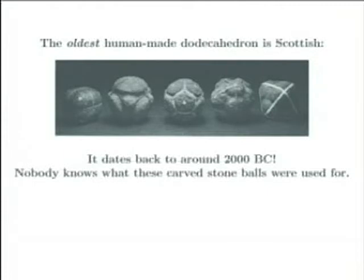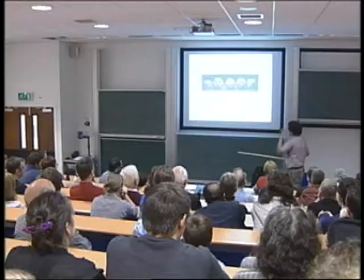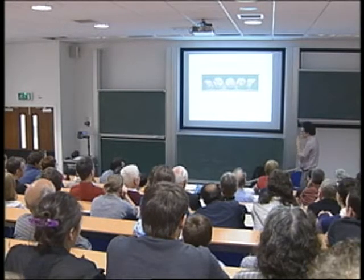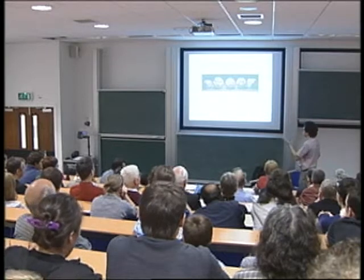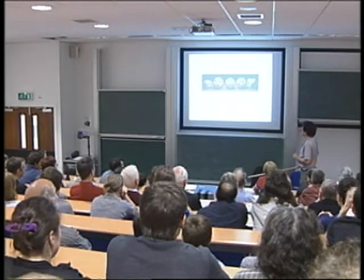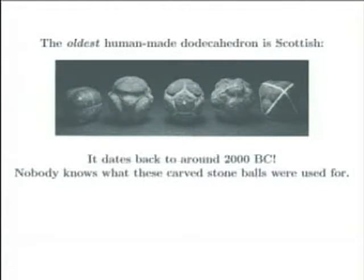So these are some carved stone balls which have been found in various parts of Scotland and northern England that date back to around 2000 B.C. And they're actually, they come in all sorts of patterns, not just these types of patterns, but a lot of interesting geometrical patterns. No one has any clue, as far as I know, what they were used for. But these five here are modeled after what we call the platonic solids, although Plato came out a lot after this, so it really shouldn't be called that, I guess. But this is basically a dodecahedron with these pentagons.